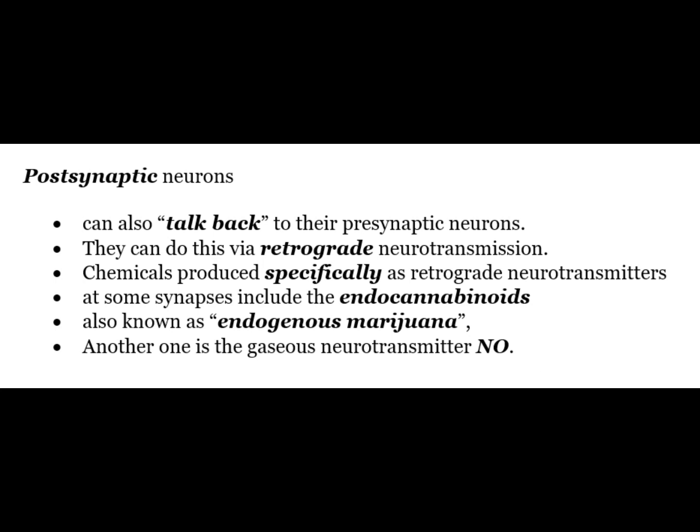Chemicals produced specifically as retrograde neurotransmitters at some synapses include endocannabinoids, also known as the endogenous marijuana. Another one is the gaseous neurotransmitter nitric oxide.